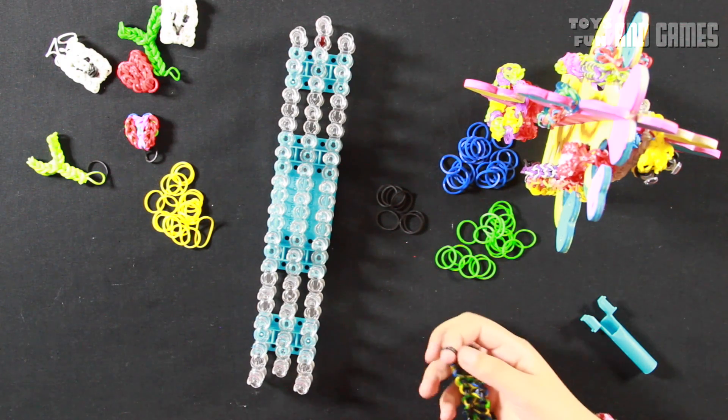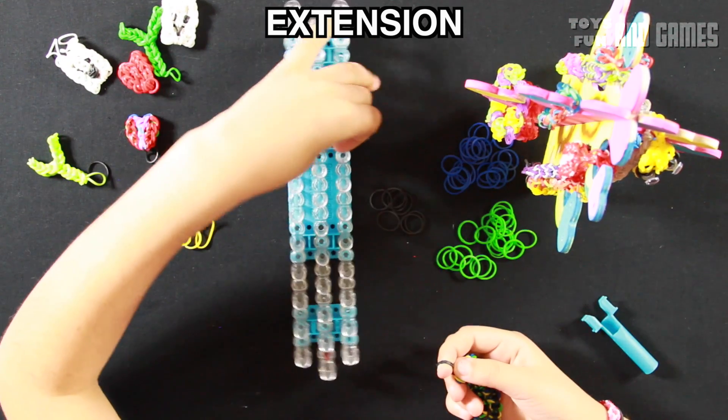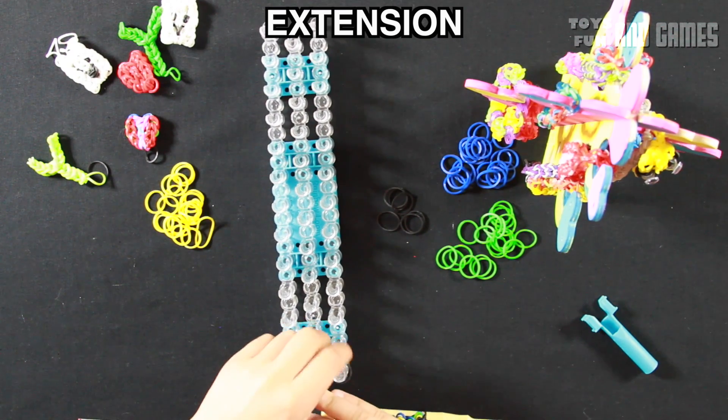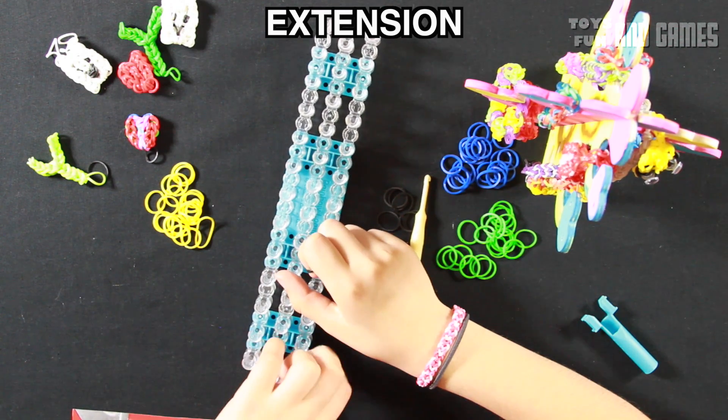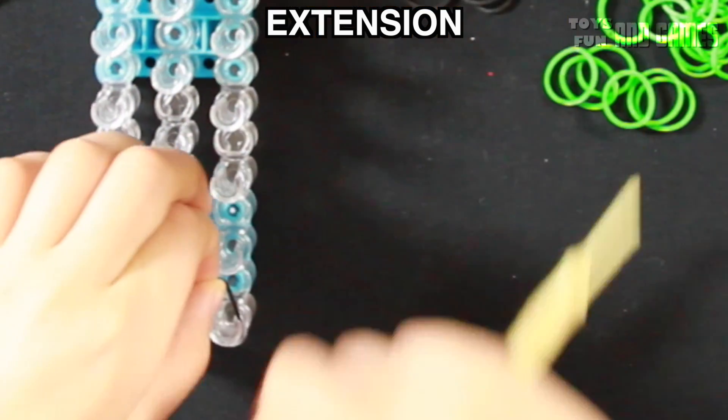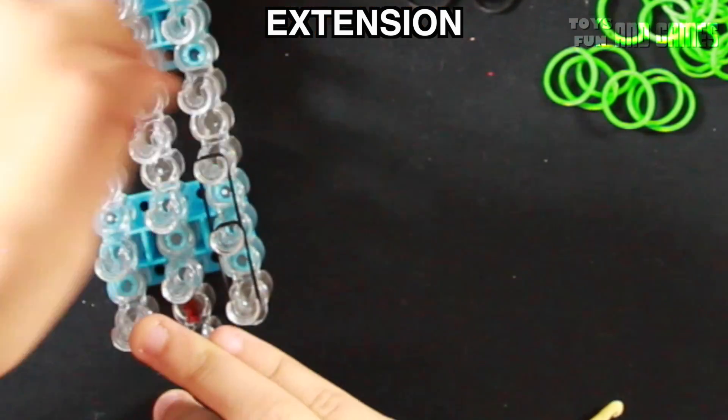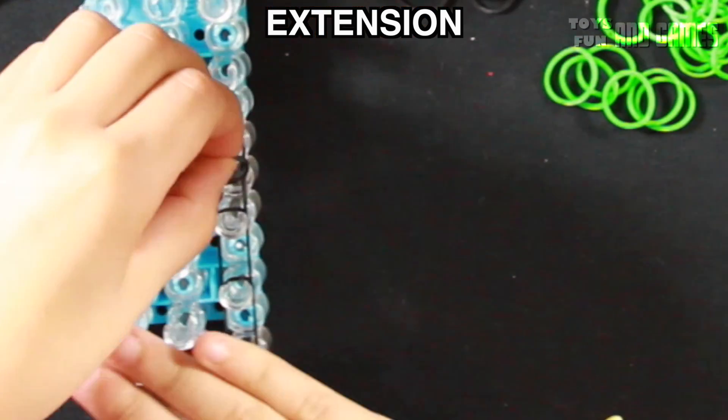So what we're going to do next is add an extension. So we're going to turn our loom. It depends on how many rubber bands you need, because you may have a small wrist, or you may have a large wrist. So you can use three or four for a small wrist, maybe. And for a larger wrist, maybe five or six.